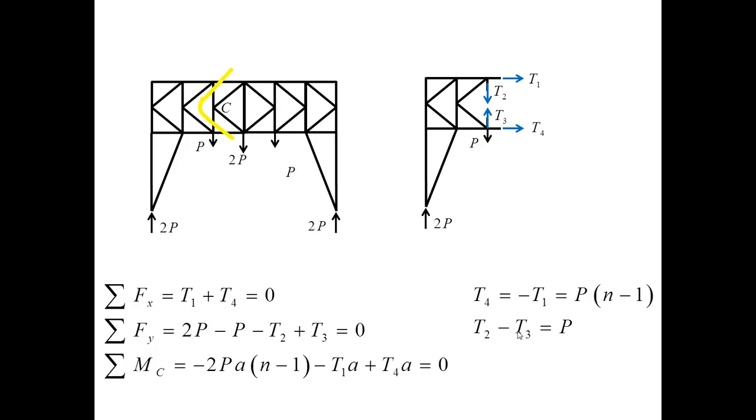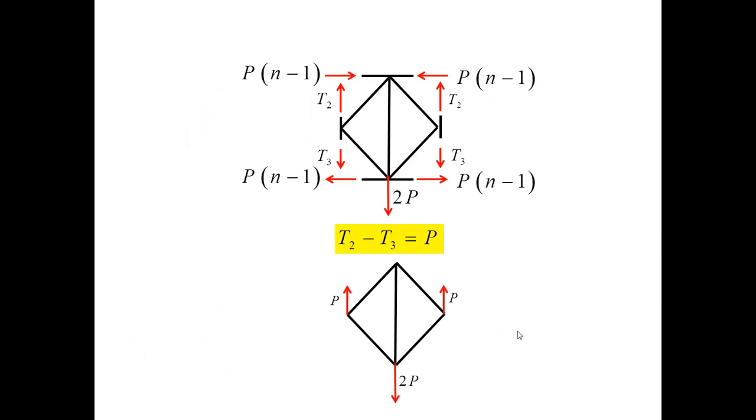Let me exploit the symmetry of the problem and draw the free body diagram for the central unit. It involves compression, tension at the top, tension at the bottom, and then the vertical bars are subjected to the forces T2 and T3 as shown. This free body diagram reflects symmetry.